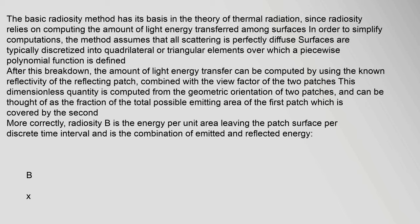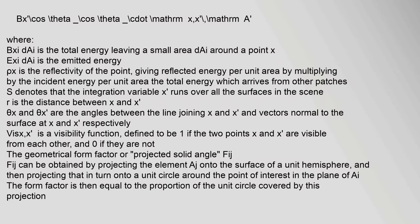This dimensionless quantity is computed from the geometric orientation of two patches and can be thought of as the fraction of the total possible emitting area of the first patch which is covered by the second. More correctly, radiosity B is the energy per unit area leaving the patch surface per discrete time interval and is the combination of emitted and reflected energy: B(x) dA = E(x) dA + ρ(x) ∫ B(x') cos θ_x cos θ_x' / (π r²) · vis(x, x') dA', where B(x) is the total energy leaving a small area around point x, E(x) is the emitted energy, ρ(x) is the reflectivity, r is the distance between x and x', θ_x and θ_x' are the angles between the line joining x and x' and the surface normals at those points, and vis(x, x') is a visibility function equal to one if the two points are visible from each other and zero otherwise.